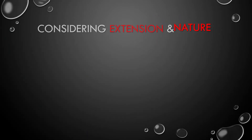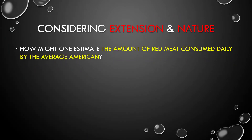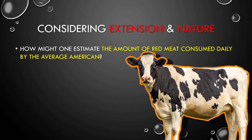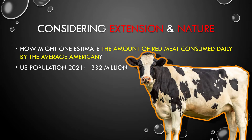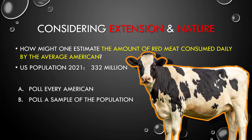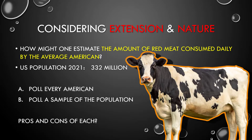Let's consider extension and nature taken together. How might we estimate the amount of red meat consumed daily by the average American? The U.S. population as of 2021 is 332 million people. Option A: poll every American. Option B: poll a sample of the population. If we poll every American, we'd get a more accurate number — possibly a complete induction — but imagine the difficulty. If we poll a sample, it won't be as accurate in principle, but it's going to be more practical.